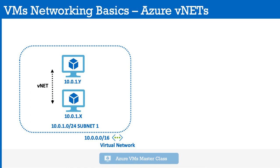What happens if the virtual machine needs to communicate outside of the virtual network? For example, you want to connect from your own laptop to the virtual machine running in Azure, or you want to connect the VM in the VNet to your own on-premises data center. In this case, the virtual machine needs a public IP. The public IP is unique on the internet, just like a web server's IP, so end customers can connect to it. We will attach a public IP to the NIC card of the VM.